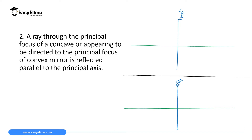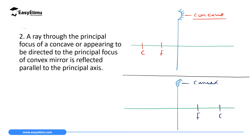The second ray is a ray through the principal focus of a concave mirror, or appearing to be directed to the principal focus for a convex mirror — it is reflected parallel to the principal axis. For the concave mirror, we draw the focal point F and center of curvature C in front. If a ray passes through the focal point, it will be reflected parallel to the principal axis after reflection.